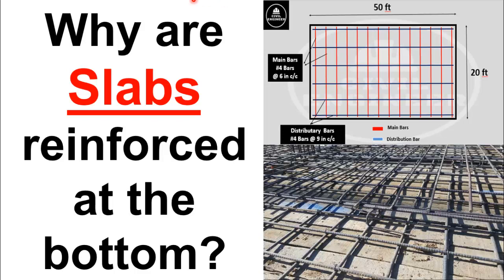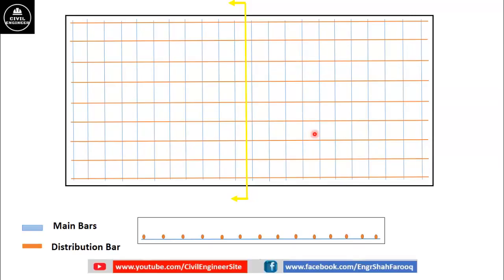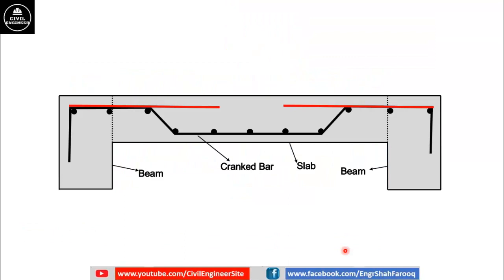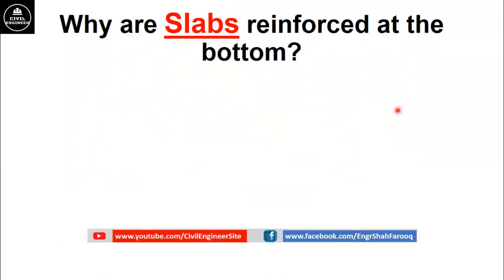Hello dear friends, welcome back to your YouTube channel Civil Engineers. In slabs, the reinforcement is generally provided at the bottom of the slab. This can be seen in this drawing — you can see that steel bars are provided at the bottom. But this is not always the case; if hogging or negative moment occurs, you have to provide reinforcement at the top of the slab also. In this video lecture we are going to discuss why most of the time steel reinforcement in slabs is provided at the bottom. Watch the video in full and do not forget to like.